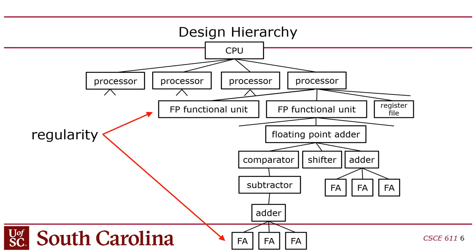The regularity part: notice that in an adder you have multiple copies of a full adder, and in a processor you have multiple copies of the functional unit. You see a lot of repetition and copying — that's regularity. That's how chips get so big. GPUs are famous for this because they take a core and stamp out a whole bunch of them. GPUs are very regular, homogeneous, structured designs, which is why it's easy to scale them up by adding more cores.